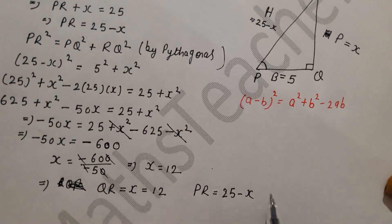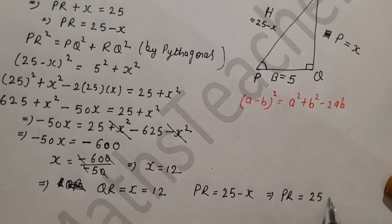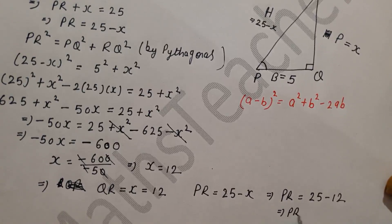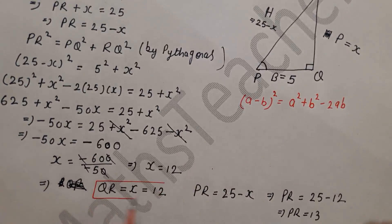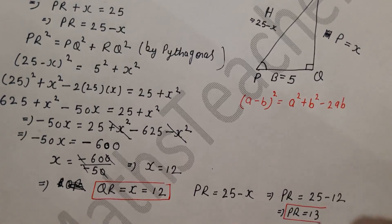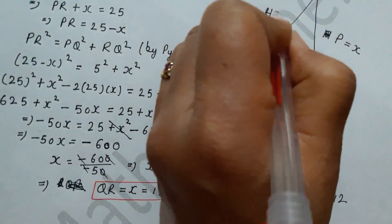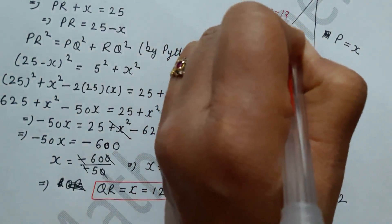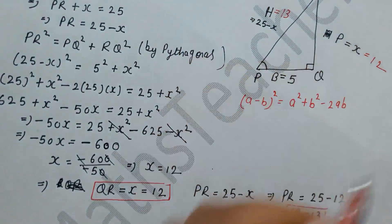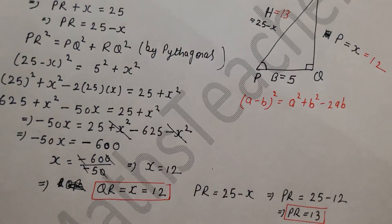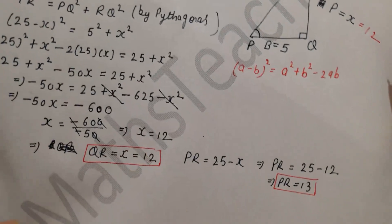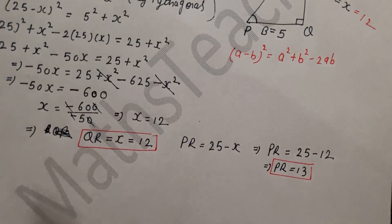This gives us QR equal to 12 and PR equal to 25 minus 12 equals 13. So our triangle now has hypotenuse PR equal to 13, perpendicular QR equal to 12, and base PQ equal to 5.